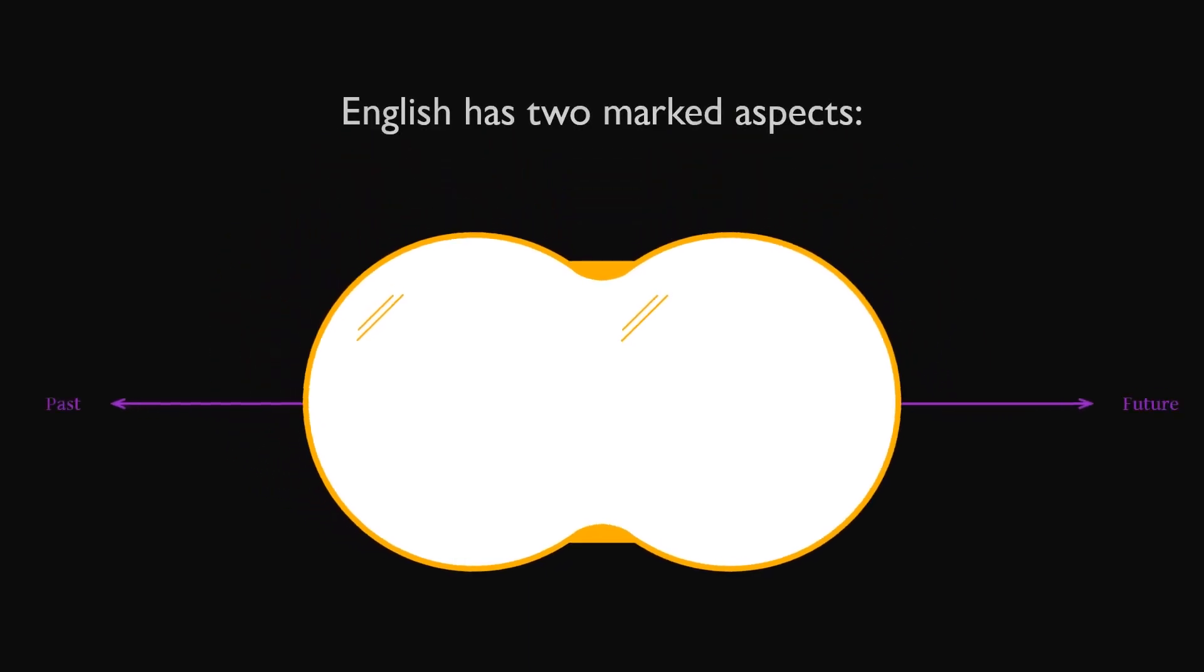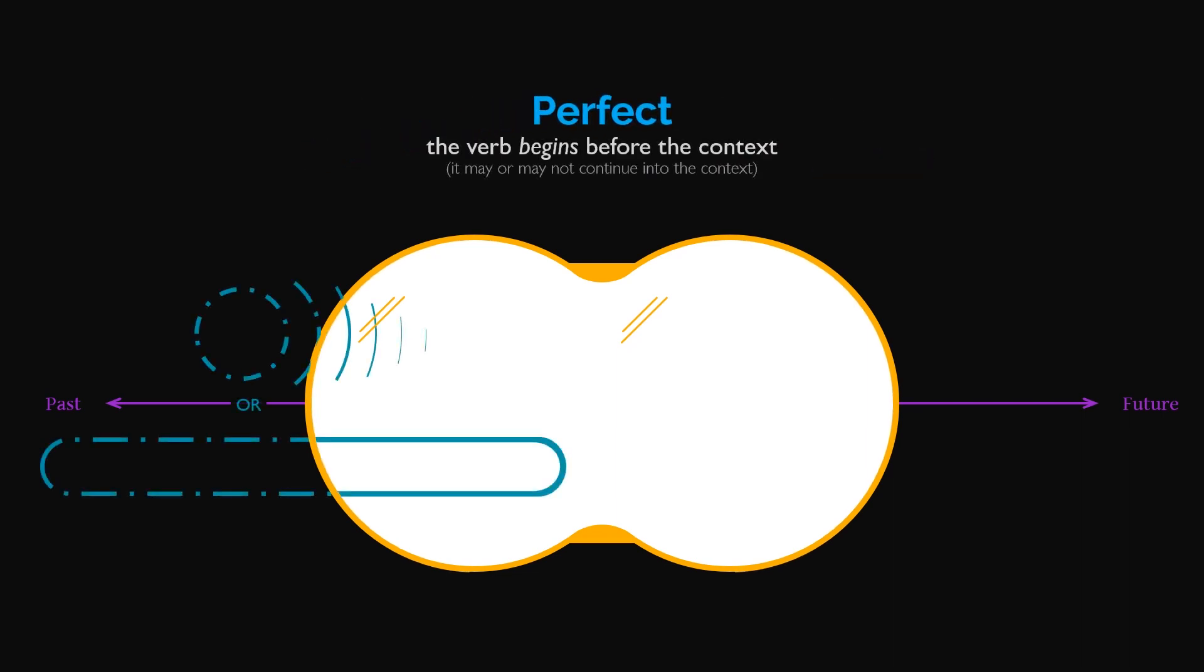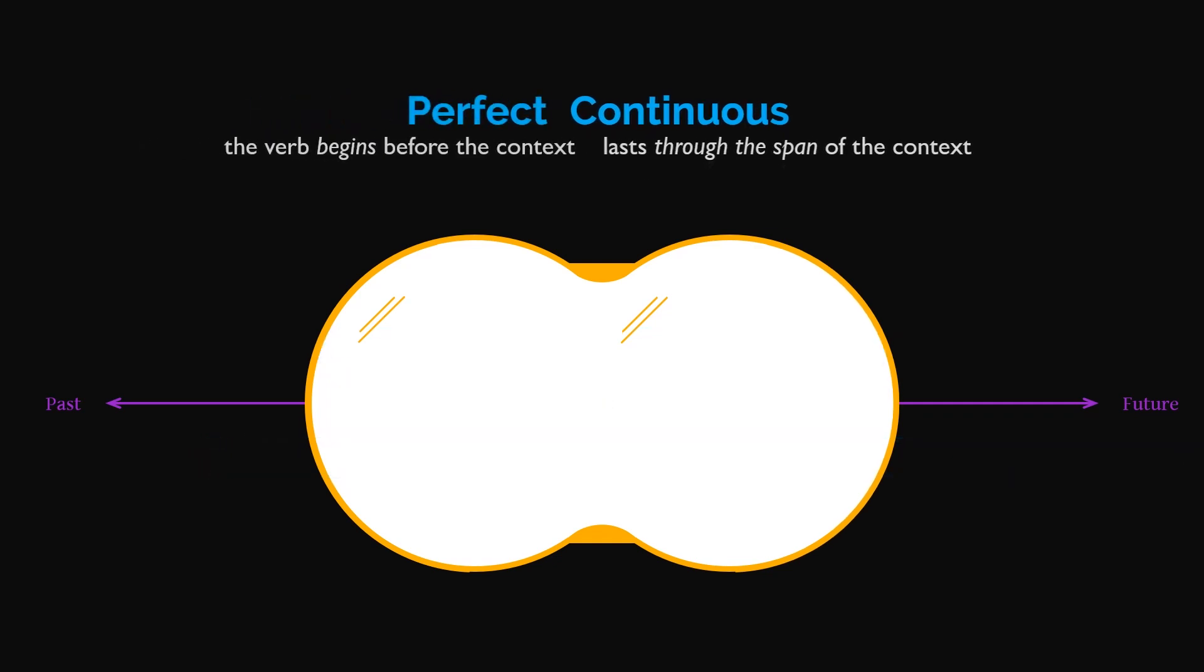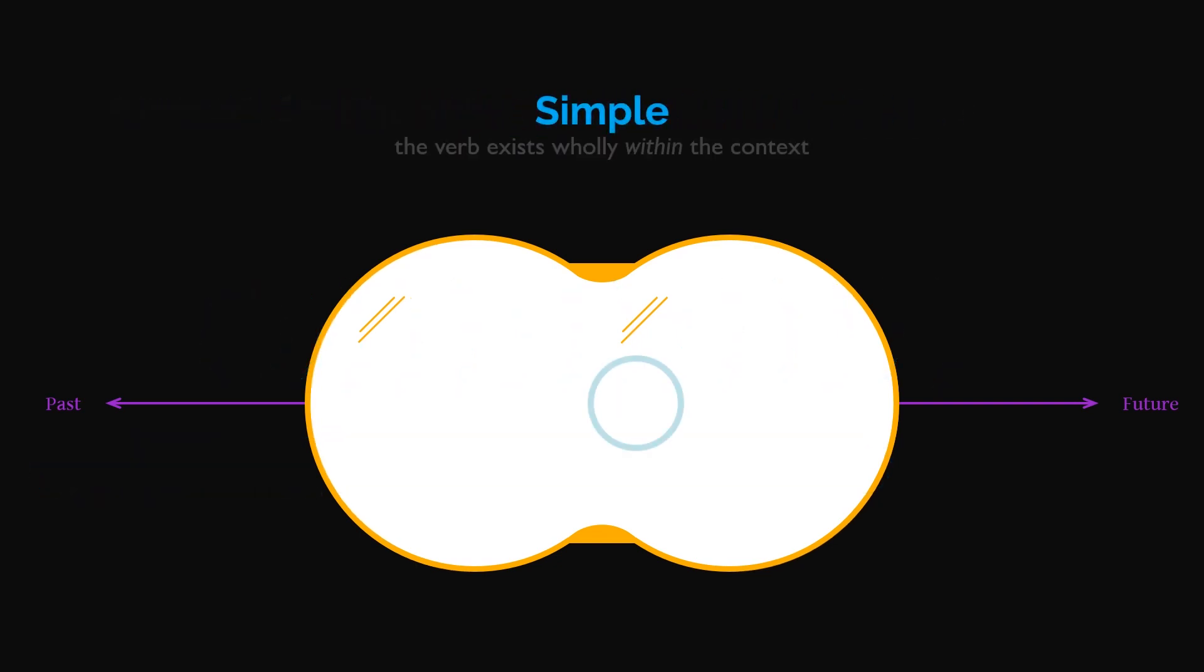English has two marked aspects: perfect and continuous or progressive. The perfect aspect communicates that the verb begins before the context. The continuous aspect communicates that the verb lasts at least through the span of the context. Since these criteria are not mutually exclusive, it's possible for a verb to be both perfect and continuous. But a verb that exists wholly within the context is called simple and is neither perfect nor continuous.